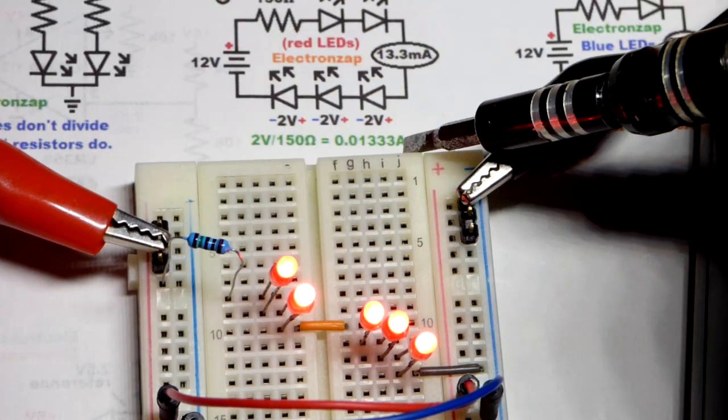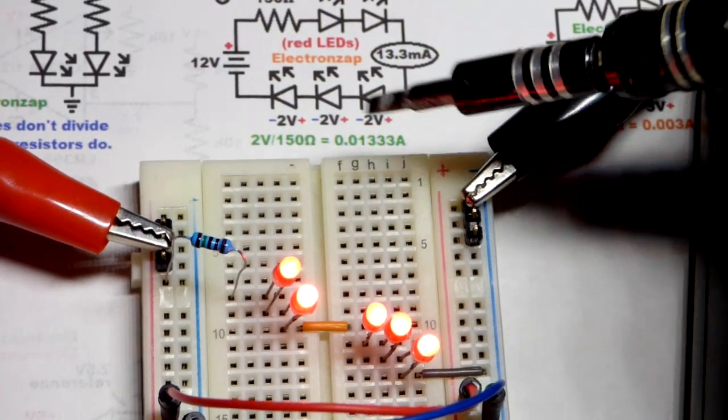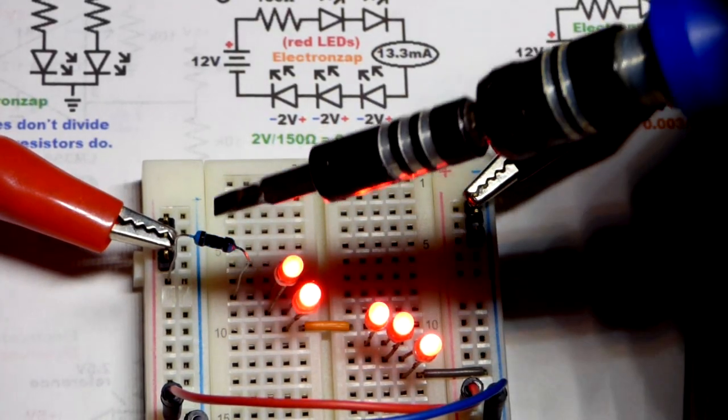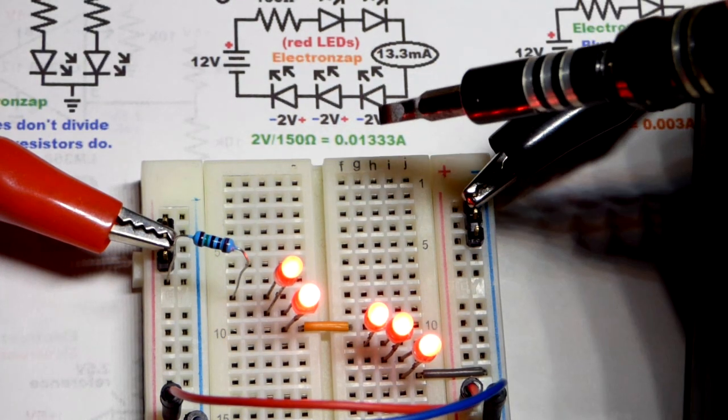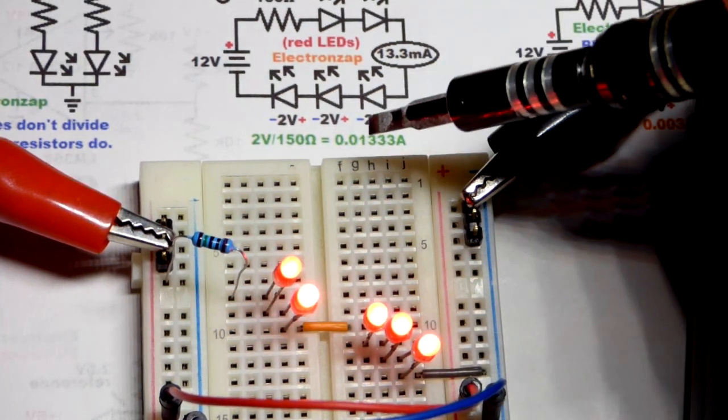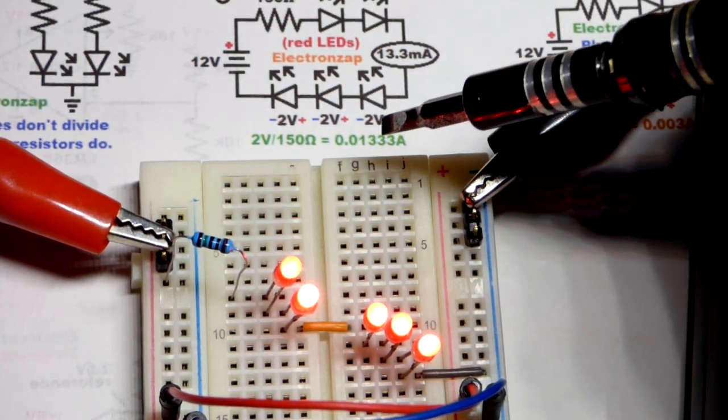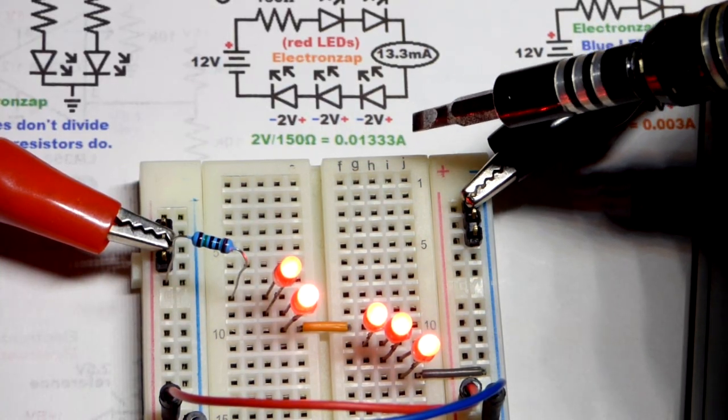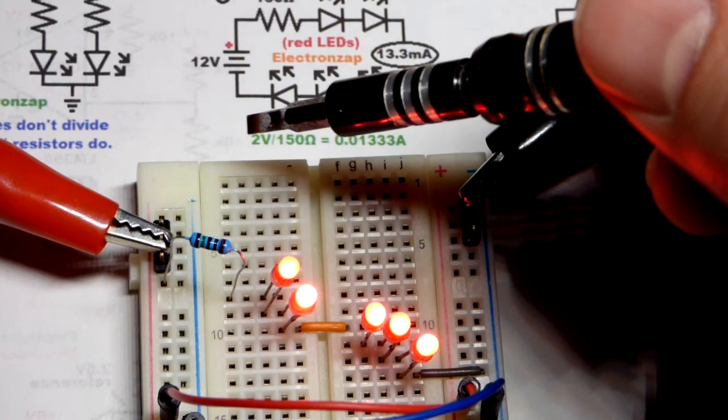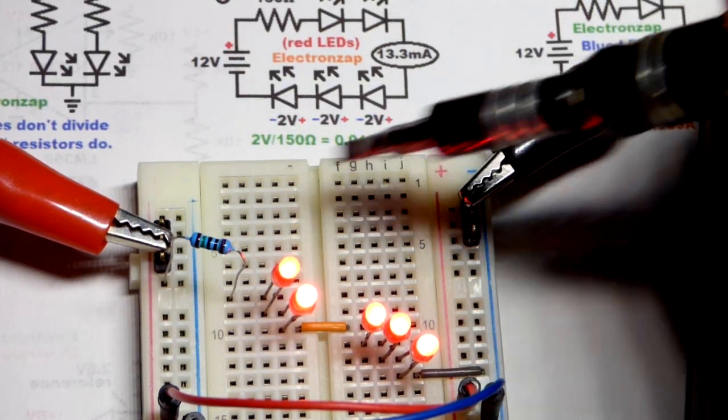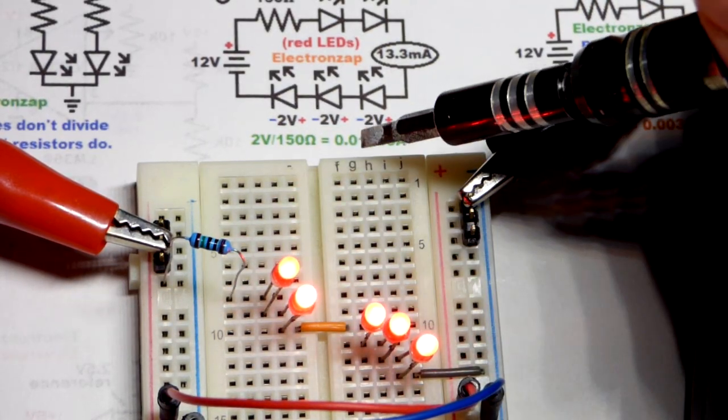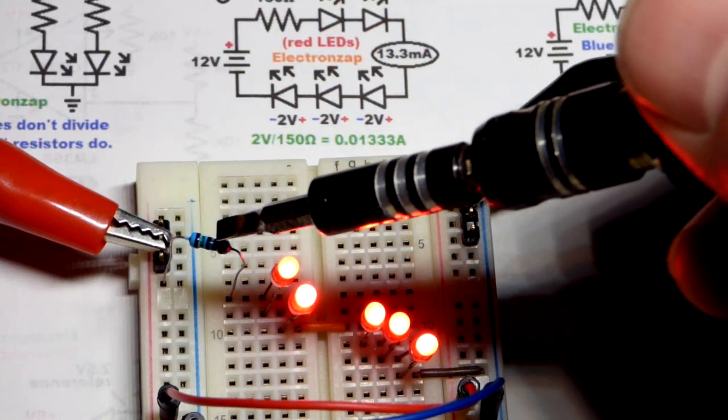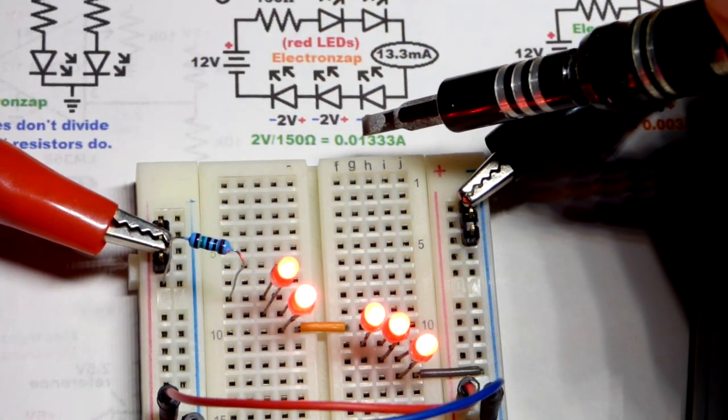So another thing to be aware of, the amount of heat that the resistor is generating, we could look with the thermal camera. But people don't usually stick around for those videos though. So we're just going to look at the math. So 0.013 forever amps of current times two volts across the resistor. That's how you calculate how hot it's going to get, how much heat it's going to generate. It has to be able to dissipate that heat.